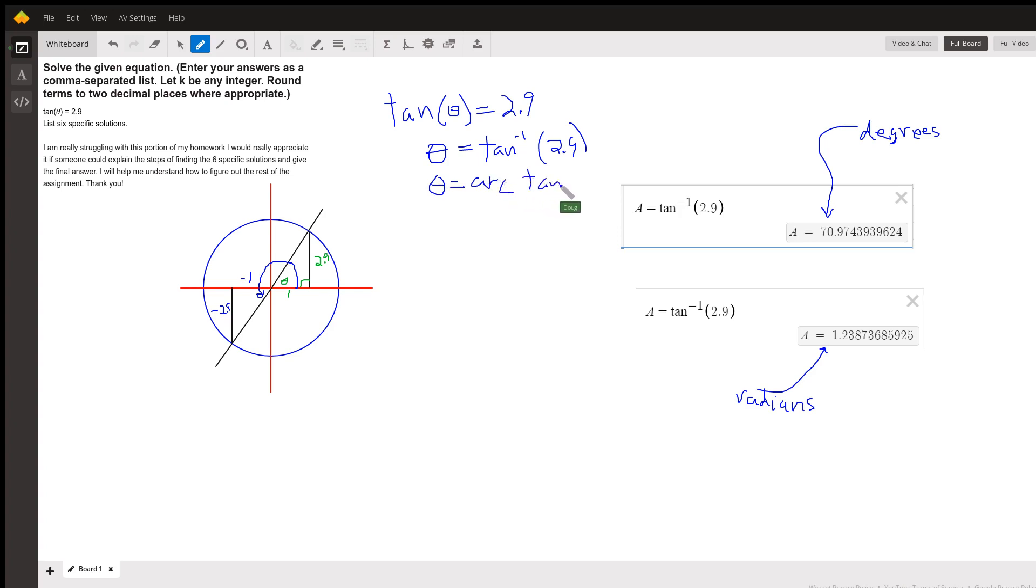I like to say to myself, theta is the angle that has a tangent of 2.9. And a calculator will only give you one value, this one right here in degrees.